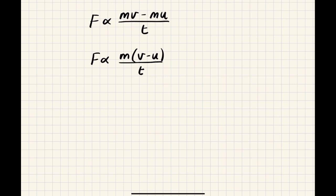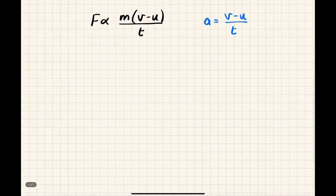Now, at this point, what we want to realize is that V minus U over T is acceleration. Acceleration is the final velocity minus the initial all over time. So I'm going to replace this entire part of the equation with the letter A. So that gives us our equation here: F is proportional to MA.